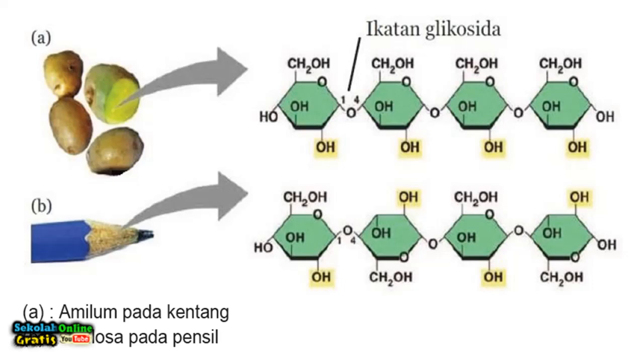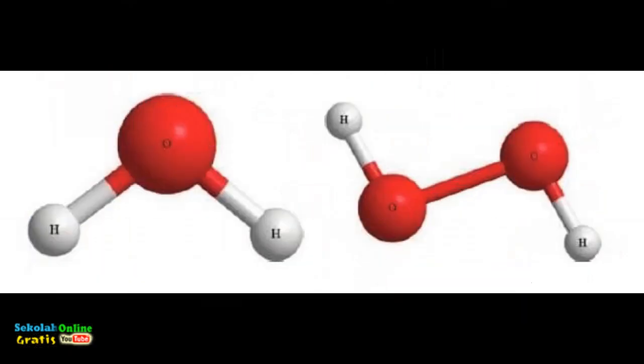Starch and cellulose have the same constituent molecules namely glucose but the bonds between molecules are different. Cellulose is a hard substance. If consumed by the humans it cannot be digested by the body. Starch can be digested and used as an energy source. This shows that the pattern of arrangement and the type of bond between the molecules causes the substance to have different chemical and physical properties.